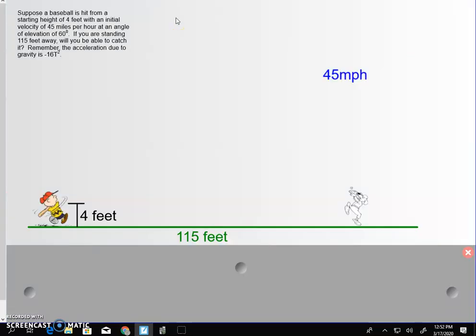So, first thing I did is I made a little sketch here. I have my batter. The ball is going to be hit four feet above ground. Out here, hoping to catch the ball at 115 feet. And this ball is going to be hit, and we all know it's going to follow this parabolic arc.